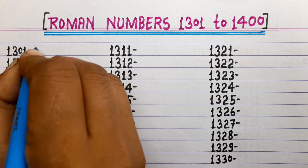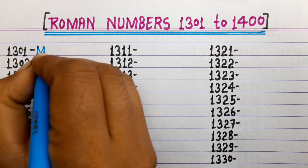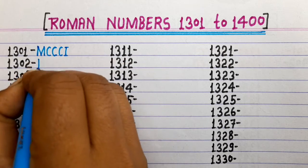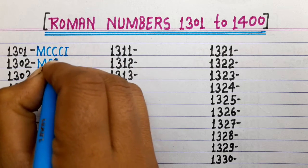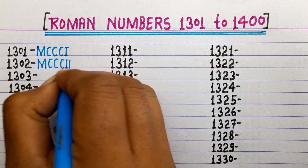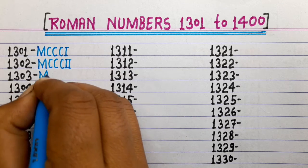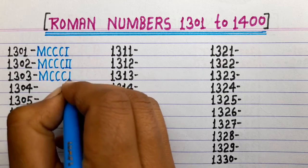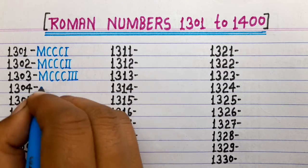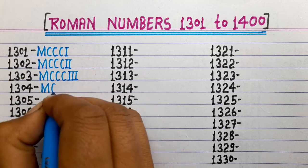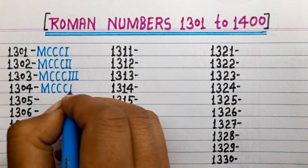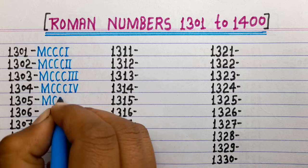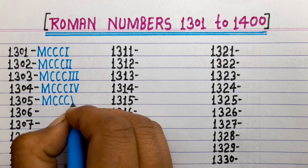1301 is MCCCI. 1302 is MCCCII. 1303 is MCCCIII. 1304 is MCCCIV. 1305 is MCCCV.